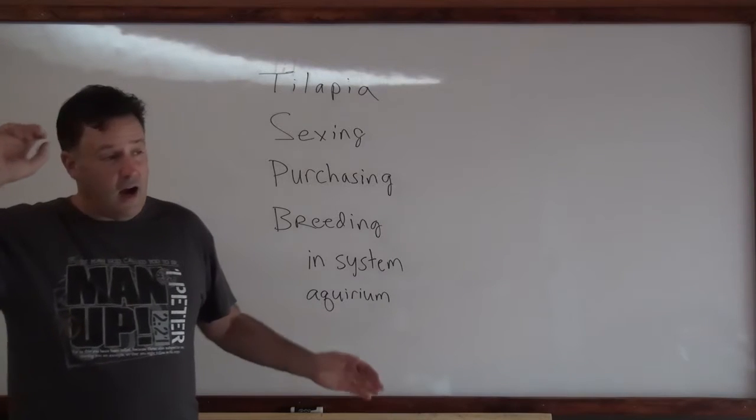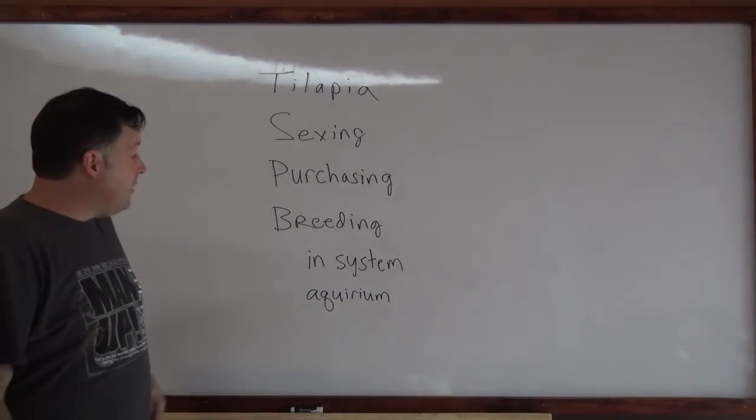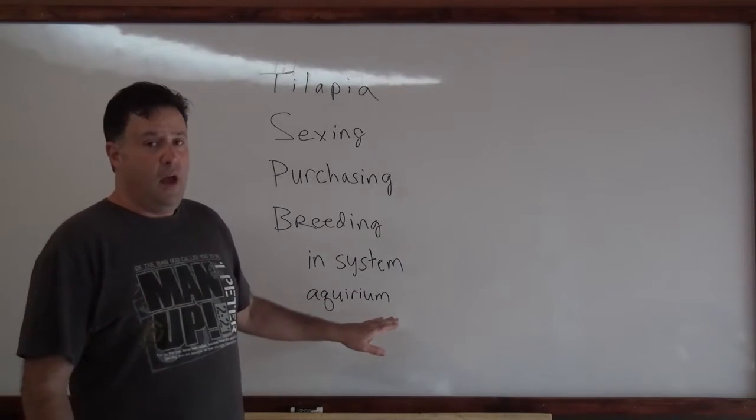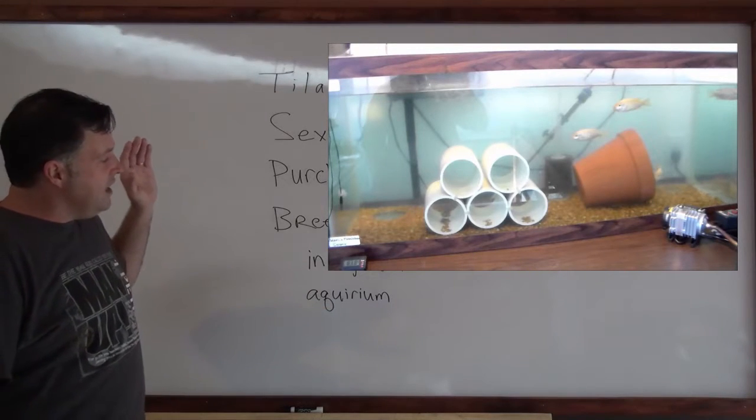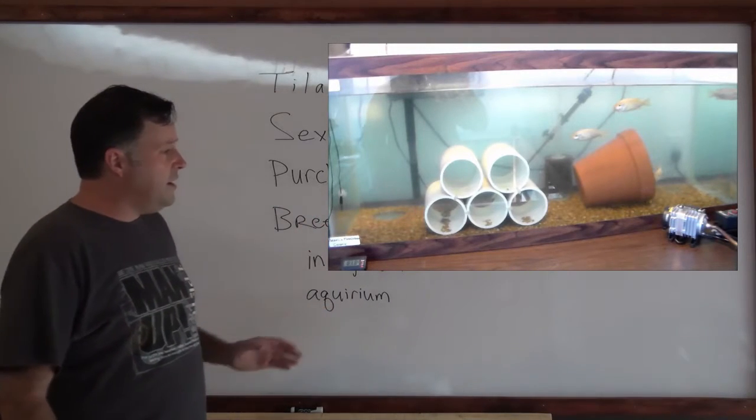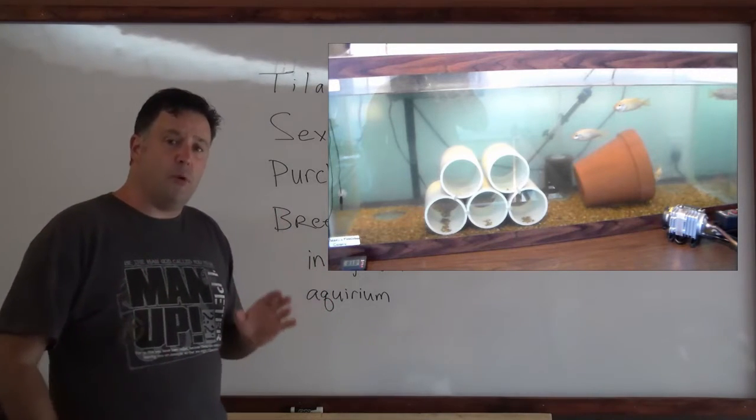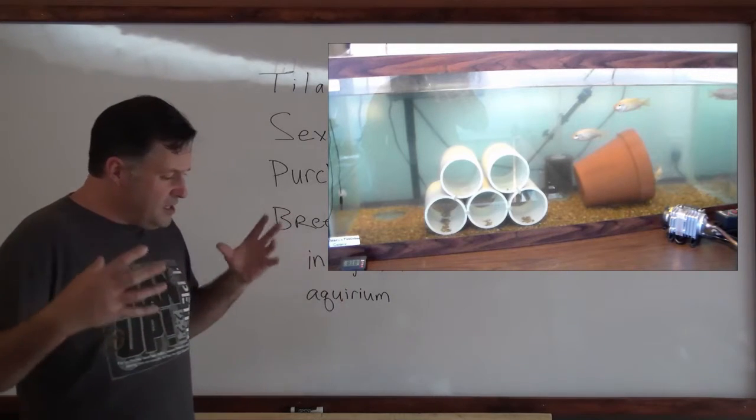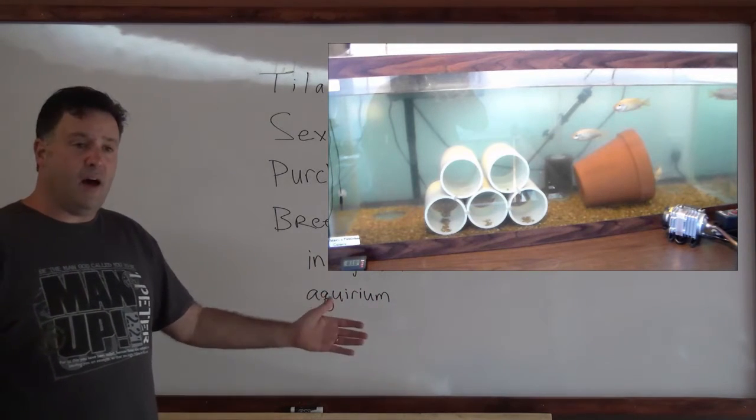I know some people that do it, they're successful at it, they have no problem doing that. You can also breed within your aquarium in your home. Here's a picture, you can see this is a setup of an aquarium. It has PVC tubes, they're about three inch PVC tubes, that's what we use. We zip tie those together. And then there's a clay pot in there. The clay pot is for the male.